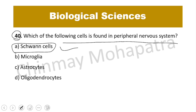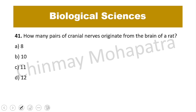So the right answer is A. Question 41: How many pairs of cranial nerves originate from the brain of a rat? The right answer is D.